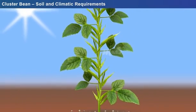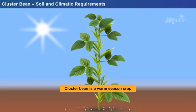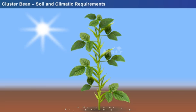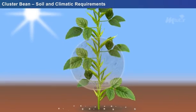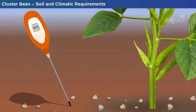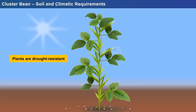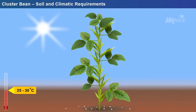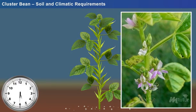Cluster bean is a warm season crop that can be grown in both summer and rainy seasons. It can be cultivated in any type of soil, but the most suitable is well-drained sandy loam soil. The plants are capable of tolerating a pH of 7.5 to 8.0. The plants are drought resistant and can grow in climates receiving 30–40 centimeters of rainfall per annum. A temperature range of 25–30 degrees Celsius is considered favorable for the growth of Guar. Long days are preferred during vegetative growth, while the flowering stage demands short days.